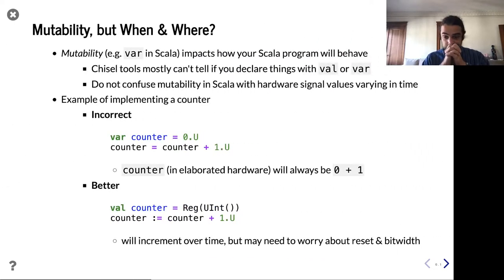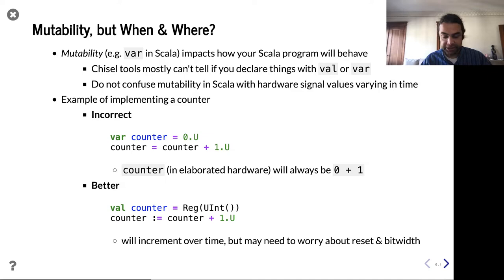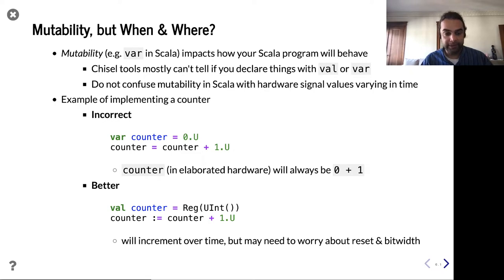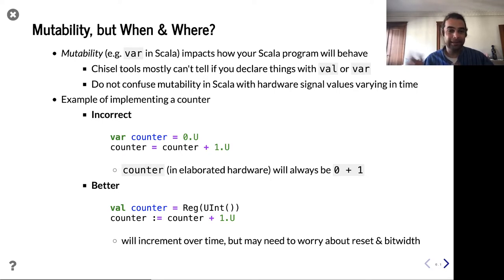Your design is static structurally — it's not going to change — but the values can change. Don't confuse the fact that the wires in existing hardware can change value for mutability in the Scala Chisel generator. Just because we reference something as a val doesn't mean that wire can't change value in the actual hardware. It just means in the Scala program it's treated as a val. Val versus var is only in the Scala program; when it gets turned into hardware, that's lost.